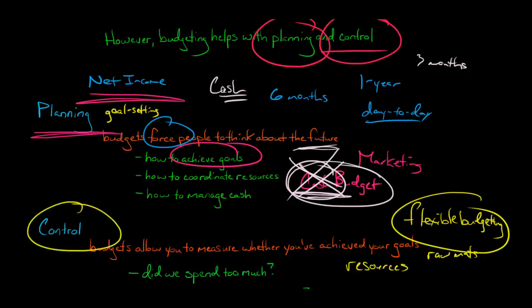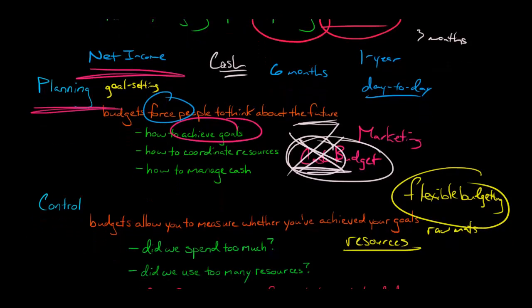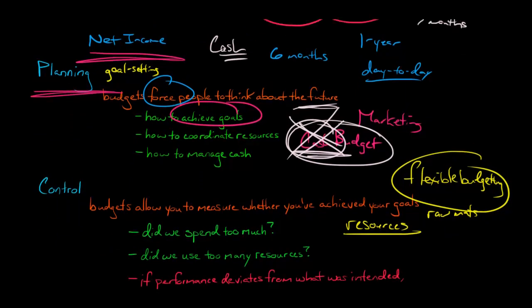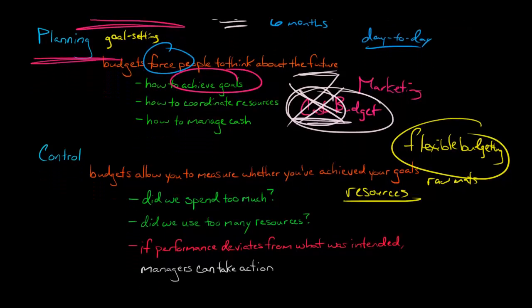But right now, the main point is we're not just making these budgets for the heck of it and then just forgetting about them. You make the budget and then you go after the fact and say, did we do a good job managing our resources? Did we spend too much money on raw materials? Did we spend too much money on SG&A? And if we do find that, yes, there was a problem, our performance was different from what we had expected at the beginning of the quarter, at the beginning of the year, now we can take action.